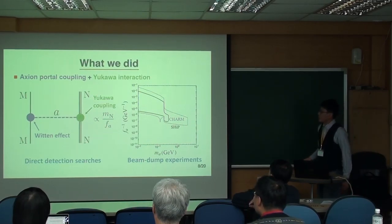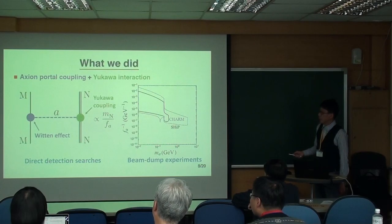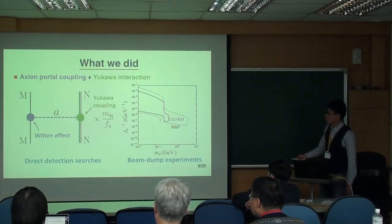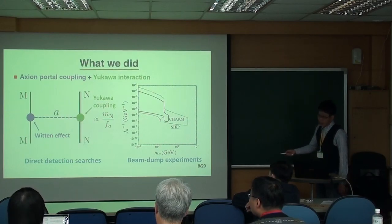So here I just want to show you what we did. Actually, our idea is very concrete. What we want to do is calculate the elastic scattering cross section between a hidden monopole dark matter and a nucleon. And again, here we introduce the axion as a mediator.